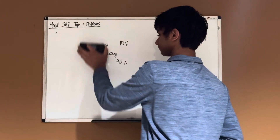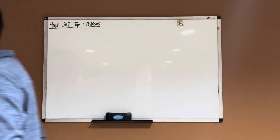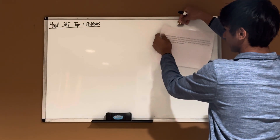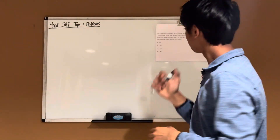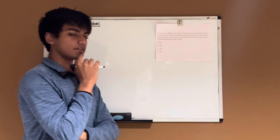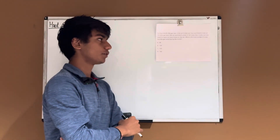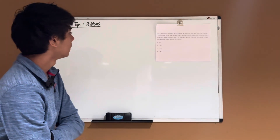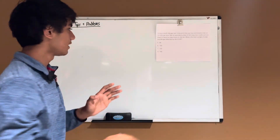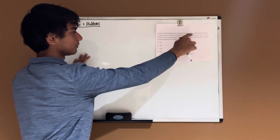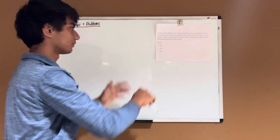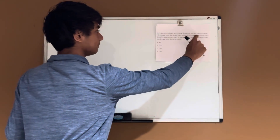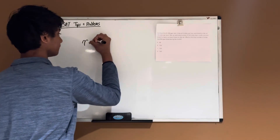Let's try out some problems now. So this problem: During a month, Morgan ran R miles at 5 miles per hour and biked B miles at 10 miles per hour. She ran and biked a total of 200 miles that month, and she biked for twice as many hours as she ran. What is the total number of miles that Morgan biked during that month? So we need to set variables. The problem gives us R and B. She ran and biked a total of 200 miles, so R plus B equals 200.